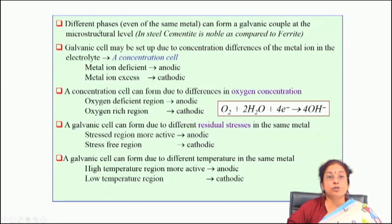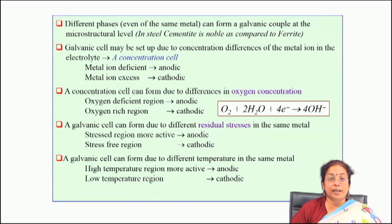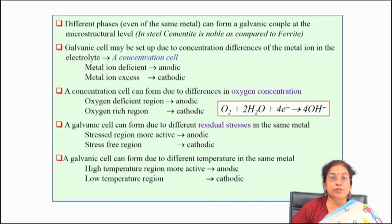Different phases of the same metal can form a galvanic couple at the microstructure level. In steel, cementite is noble compared to ferrite. If you take eutectoid plain carbon steel, due to galvanic cell formation, the ferrite part degrades and corrodes to a large extent compared to the cementite part. Galvanic cells may also form because of a concentration difference of metal ions in an electrolyte — this is called a concentration cell, where the metal-ion-deficit part acts as anode and the metal-ion-excess part acts as cathode.